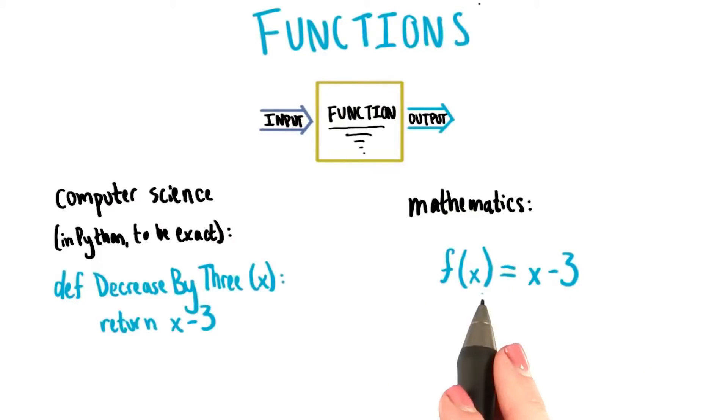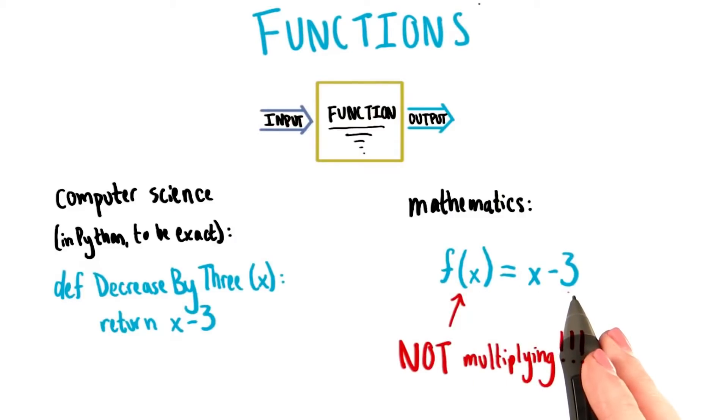Now, the way that we read the left-hand side of this equation right here is we say f of x. Now again, just like in programming, the parentheses here around the input do not mean multiplication. So the output of the function, the thing that's just equal to x minus 3, is this f of x over here.